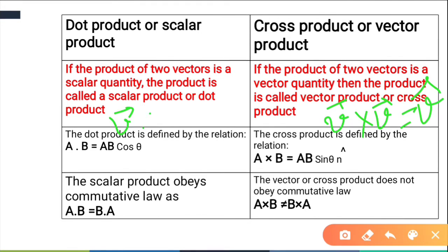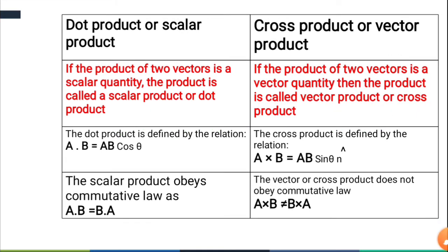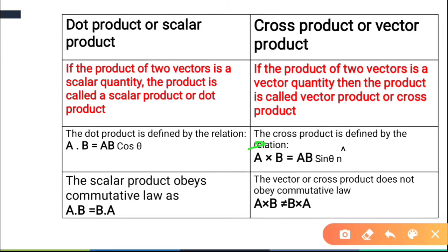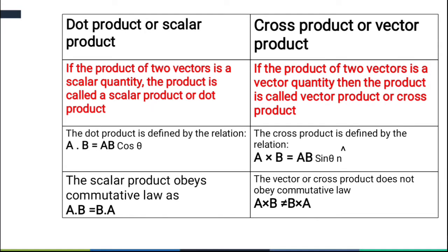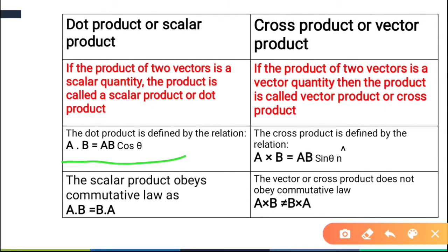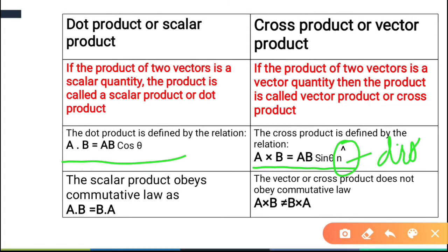If you multiply two vectors, the dot product gives you a scalar answer. This is the first difference according to the definition. For dot product, we write A vector dot B vector, and vectors are shown with arrows on them. The dot product is defined as: A·B = ab cosθ. If we do A vector cross B vector, then it equals ab sinθ n̂, where n̂ gives you the direction.